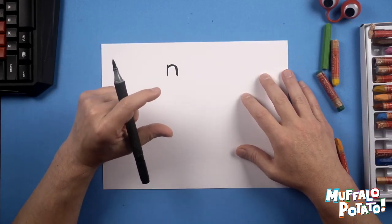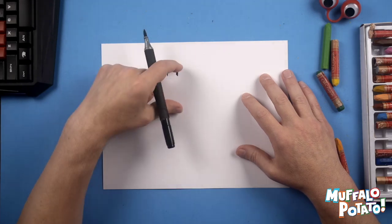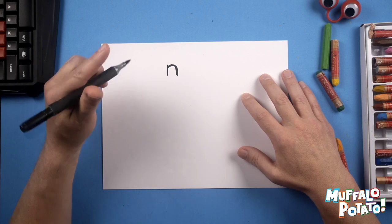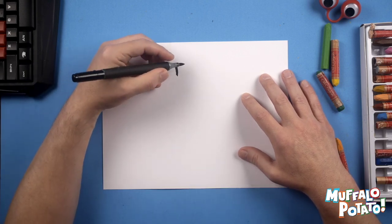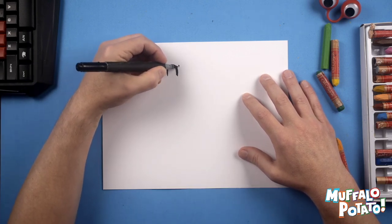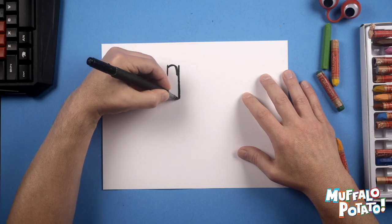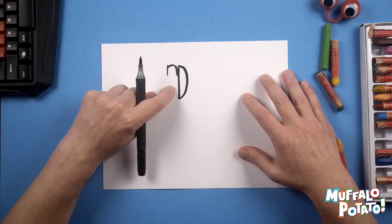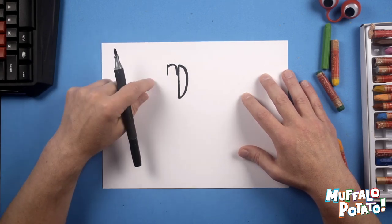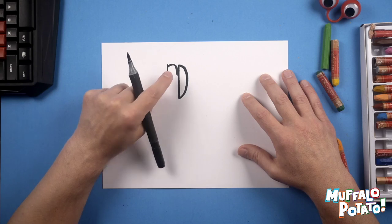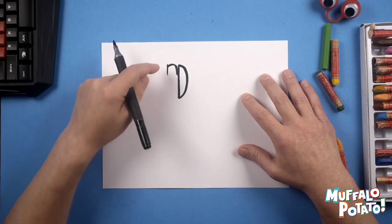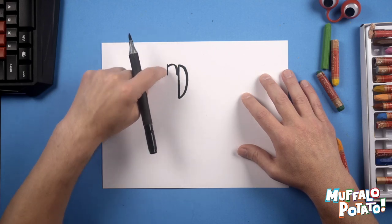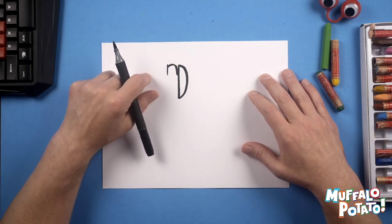Next thing we're gonna do is a thin capital D, and I want the D to be three times as tall and as long as the N. Watch me first. So we start right here where the N is, we go straight down, and then it's not too big, sort of a thin D. They're at the same level at the top, just like that.